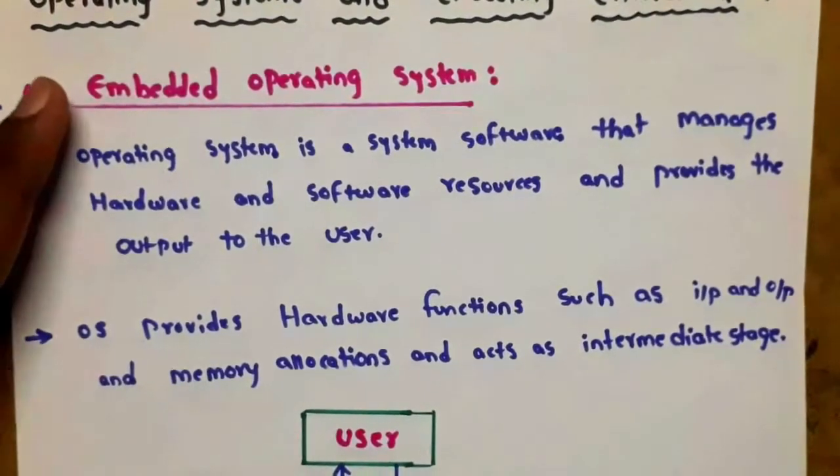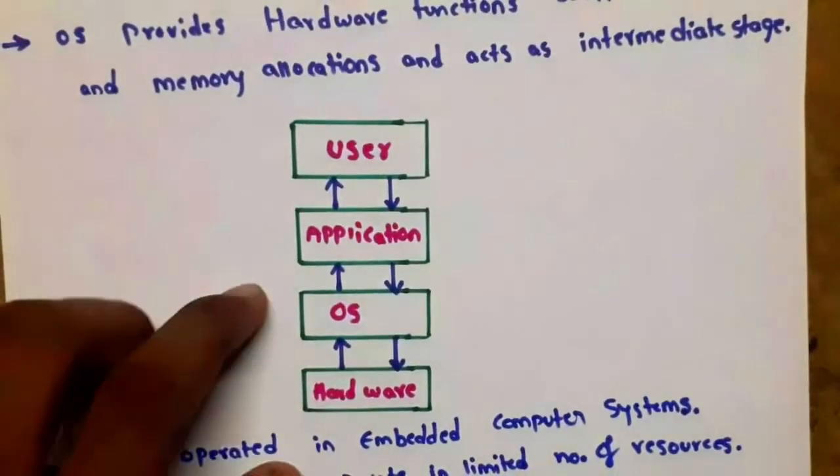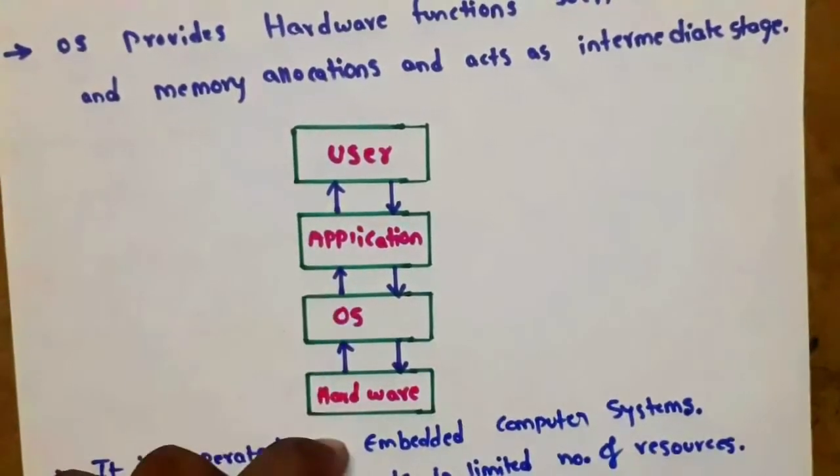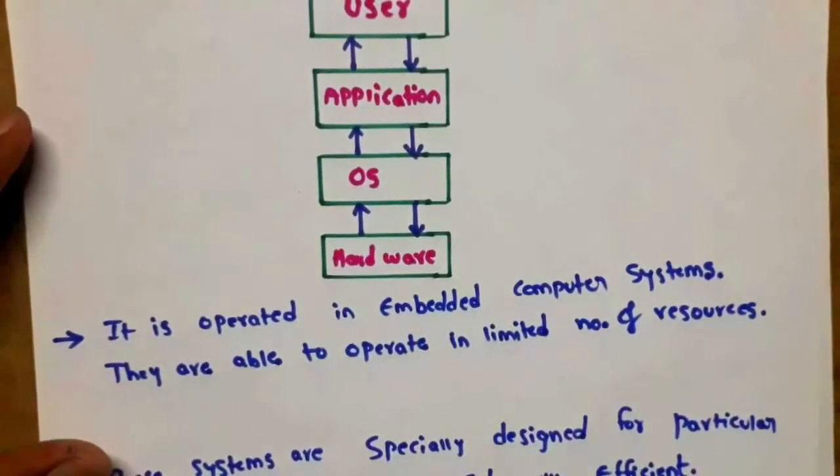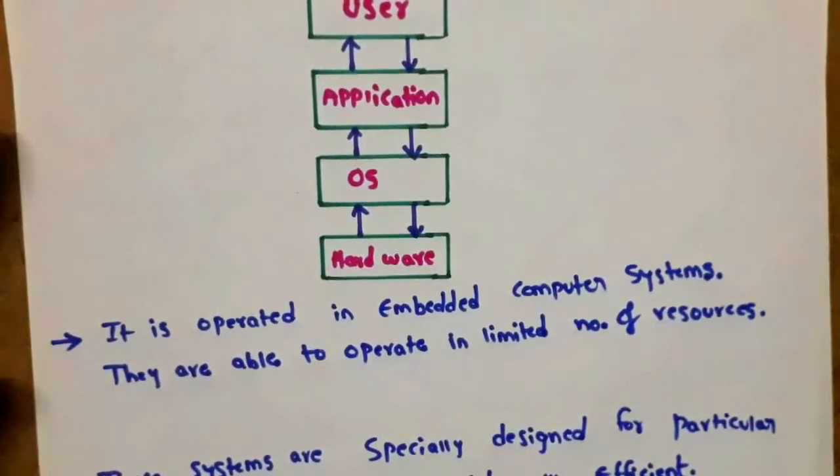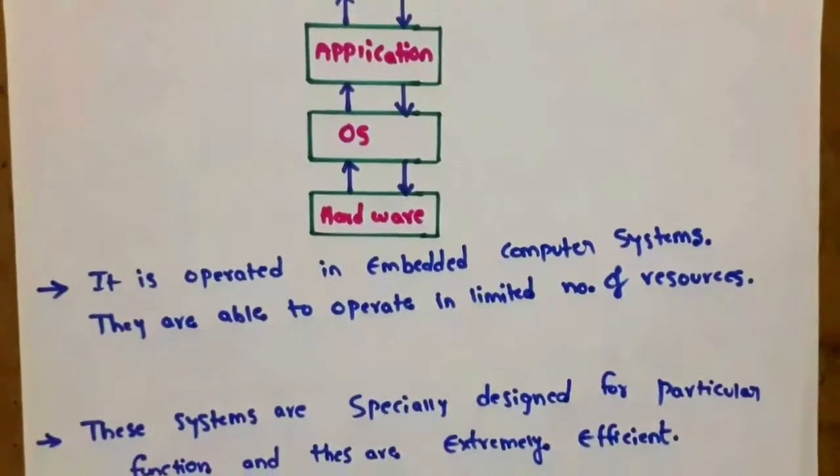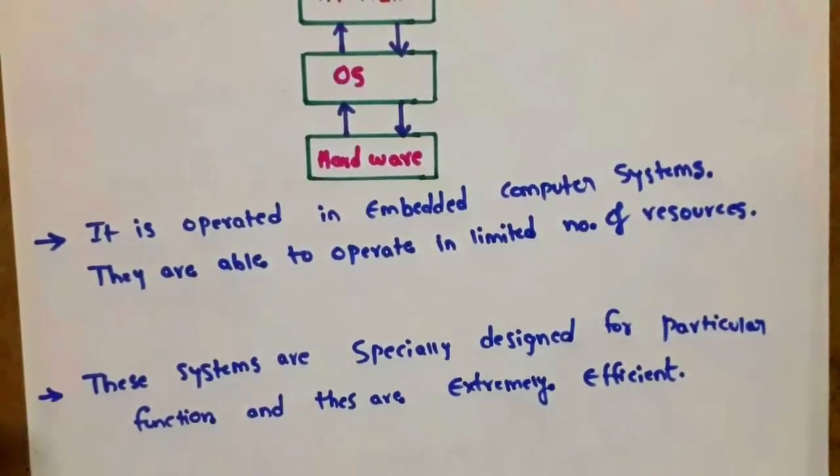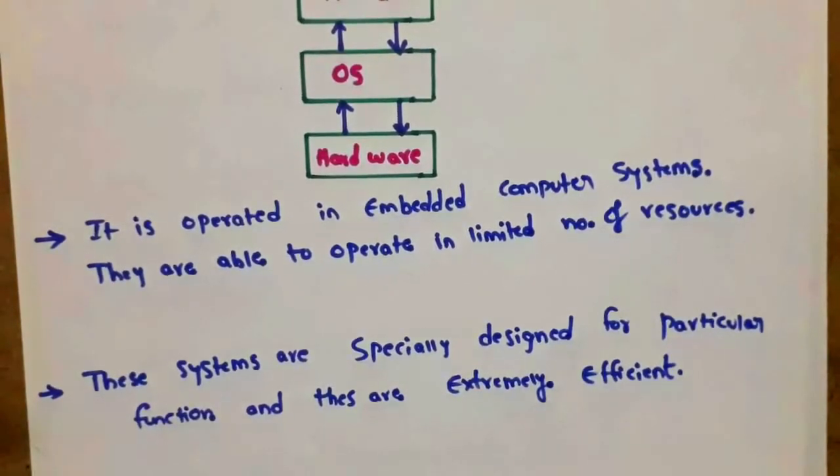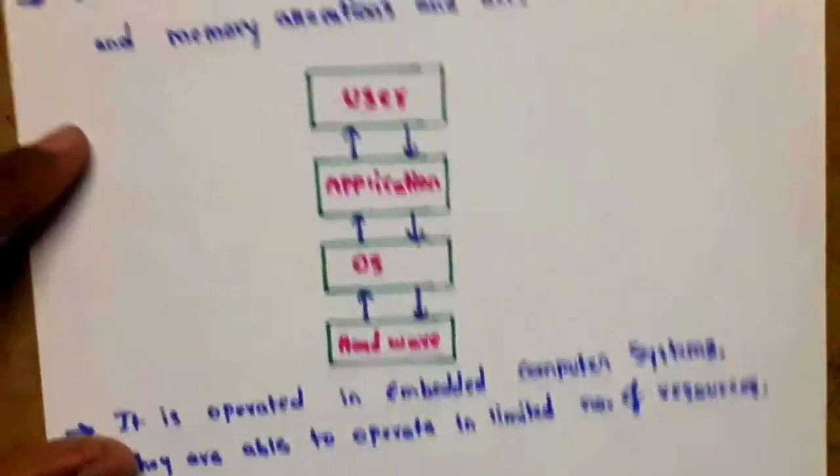The operating system provides hardware functions, input and output, and memory allocation, acting as an intermediate stage between application and hardware. It operates in embedded computer systems with limited resources. These systems are designed for particular functions and have high efficiency.